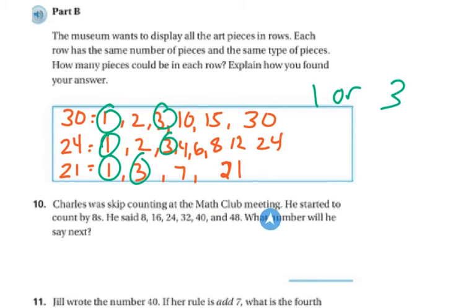Charles was skip counting in the math club meeting. He started to count by 8. He said 8, 16, 24, 32, 40, and 48. What number did he say next? If you look at the pattern, he's skip counting by 8 because 8 plus 8 is 16, 16 plus 8 is 24, and so on. So 48 plus 8 is 56.